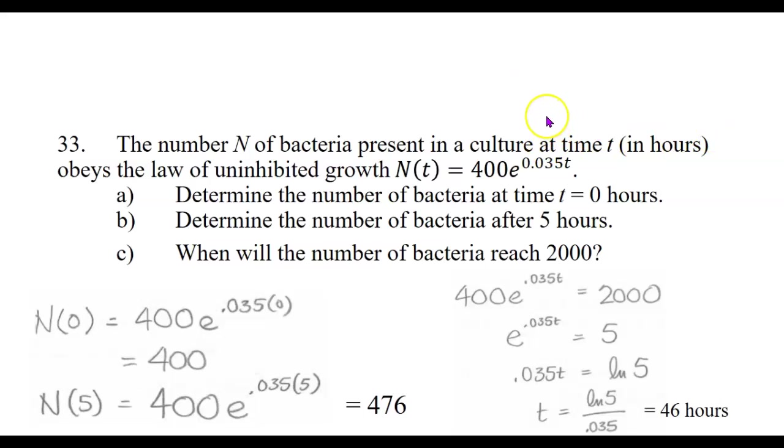We're almost done with this final review, just a little bit more to go. The number N of bacteria present in a culture at time t in hours obeys the law of uninhibited growth. N of t equals 400 times e to the 0.035t. First question, determine the number of bacteria at time t equals zero hours.